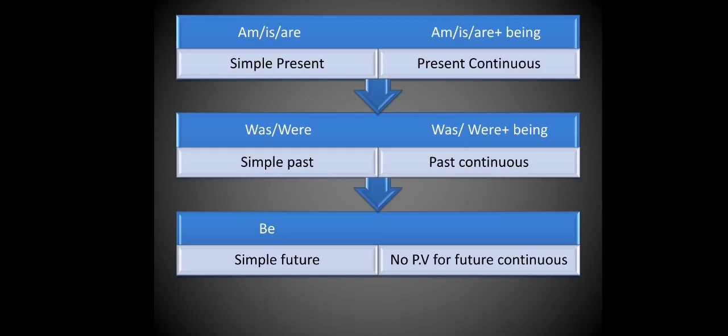So to summarize: simple present and present continuous use the same helping verbs 'am/is/are,' but continuous tense adds one extra word 'being.' Simple past and past continuous use 'was/were,' and past continuous also adds 'being.' Simple future uses 'be' as the helping verb part. No passive voice for future continuous.